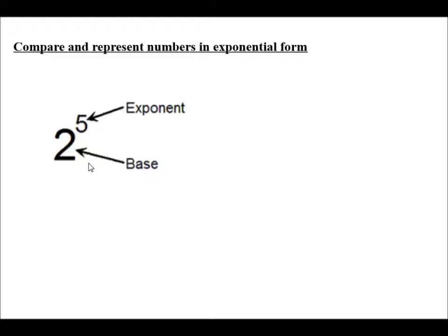If you remember from the previous recording, we looked at a number like this. The 2 was the base, the 5 was the exponent. We read this as 2 to the power of 5. This is the exponential form of the number 32.